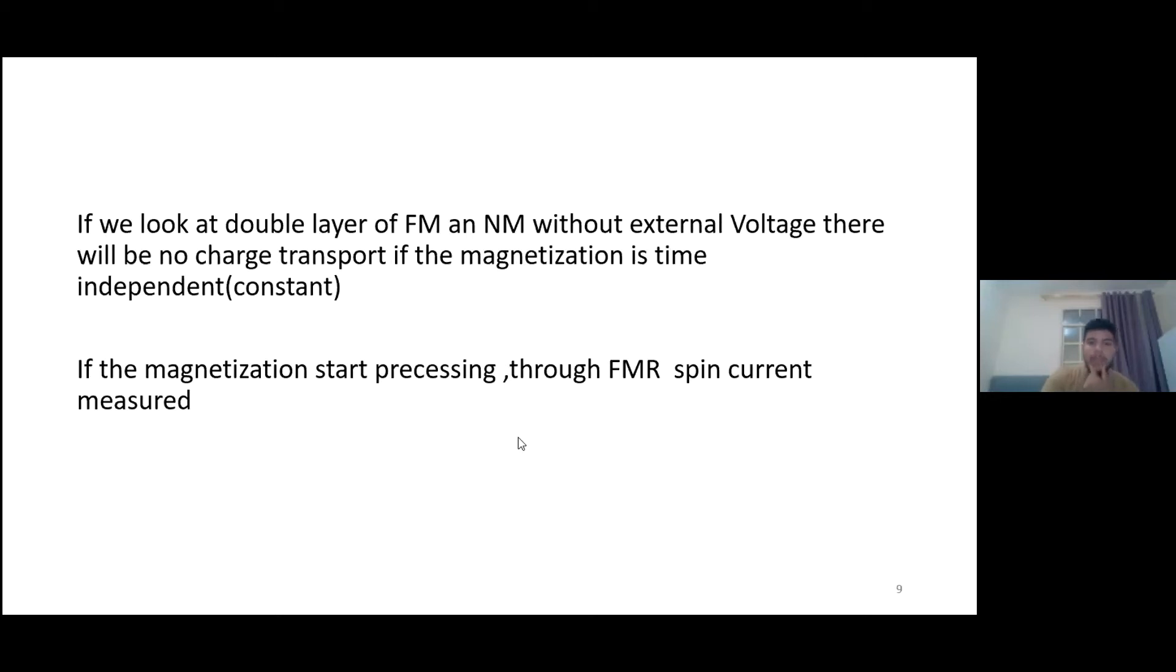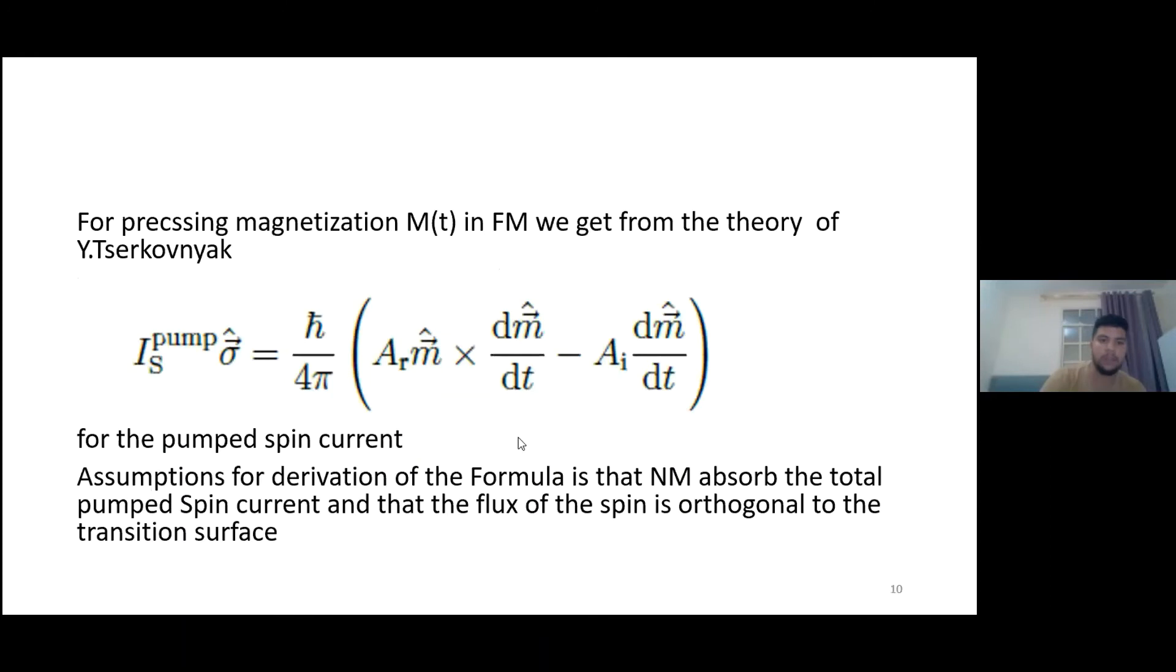If you look at the double layer of a ferromagnetic and a normal metal layer without external voltage, there's no charge if the magnetization is also time-independent. If we start the process through the FMR, then we measure the spin current. And this is described by the formula from Tserkovnyak. He describes the pumped-in spin current with this formula. But he made that one assumption that is wrong. We have to correct it later.